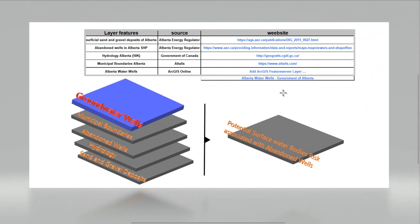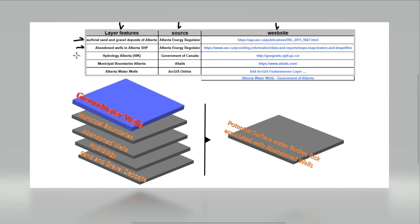In this occasion we are going to watch how we can do a geospatial analysis using vectorial layers. In this table you can see the layers of information we are going to use, the source information, and the website where you can download all these files. The layers are going to be the surface sand and gravel deposits of Alberta, abandoned wells in Alberta related with oil and gas, hydrology of Alberta 50k, municipal boundaries of Alberta, and Alberta water wells. The source of information is Alberta Energy Regulator, Government of Alberta, Altalis and RGIS online.